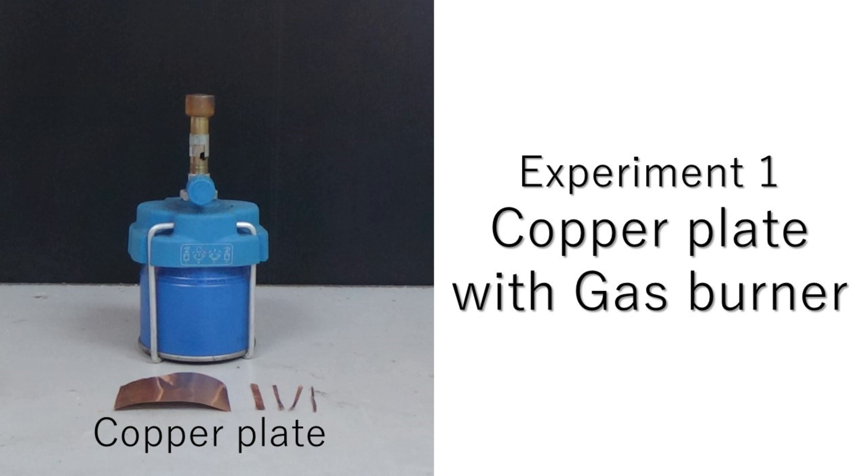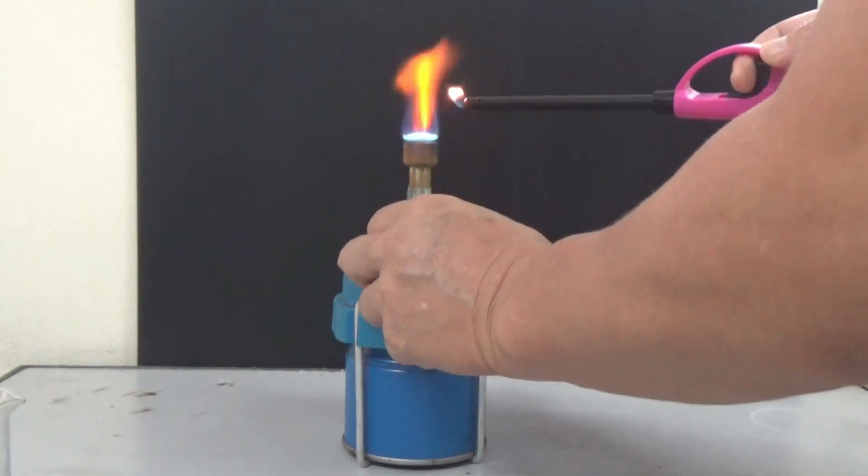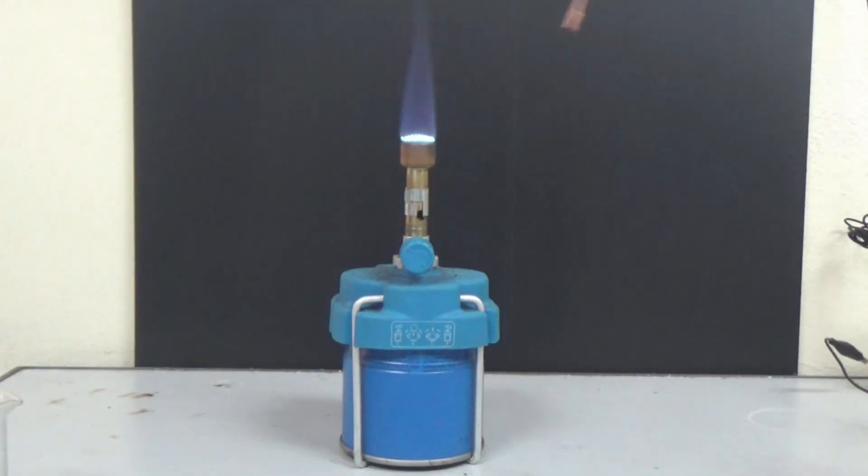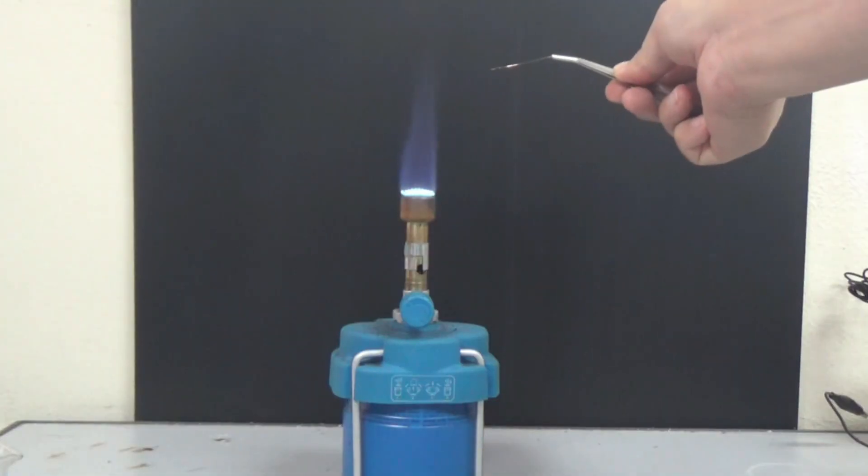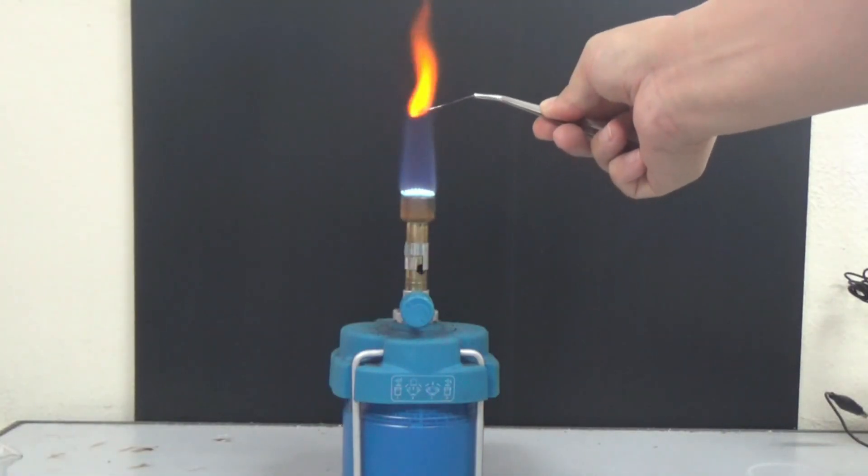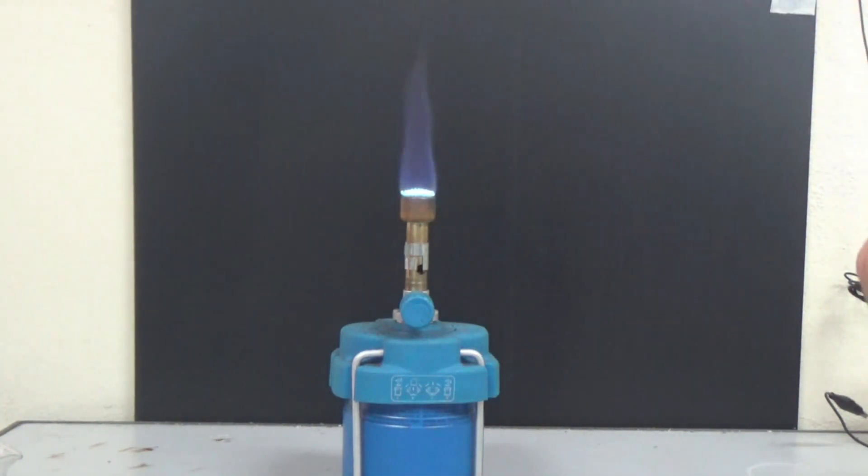First experiment: Put the thinly cut copper plate into the flame of a gas burner and observe the flame reaction. A slight green flame reaction can be observed.